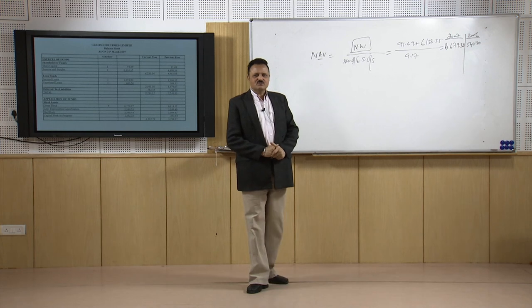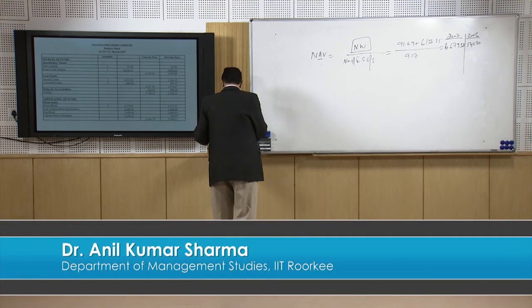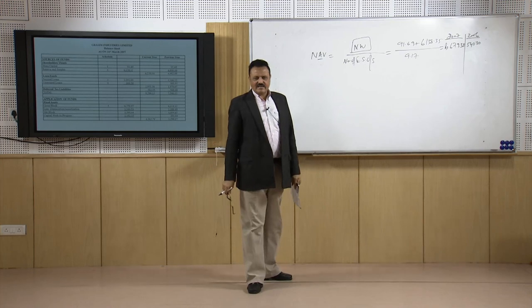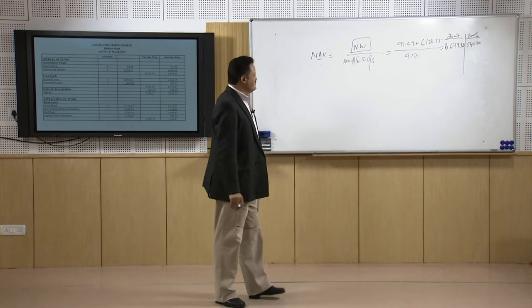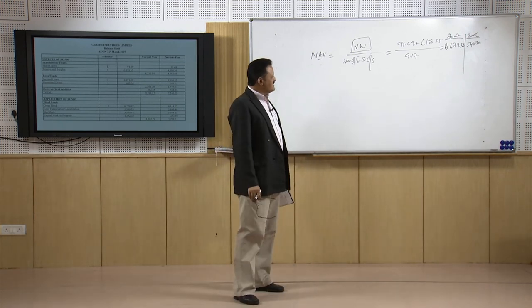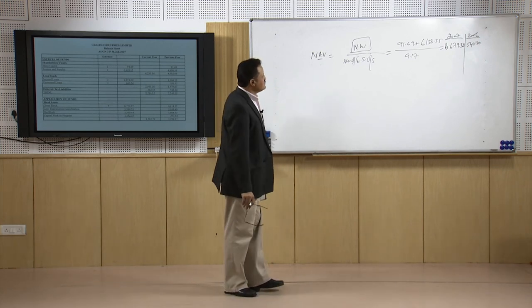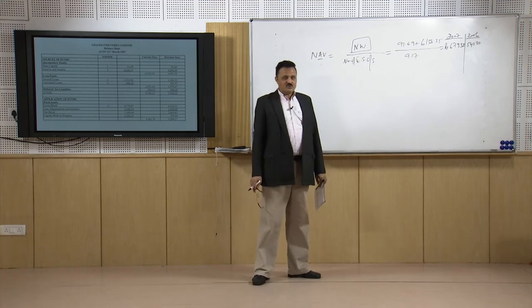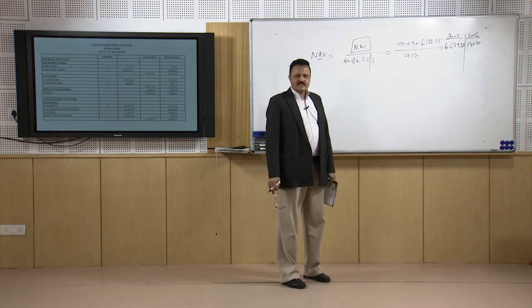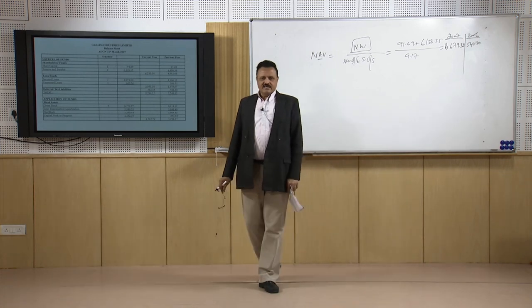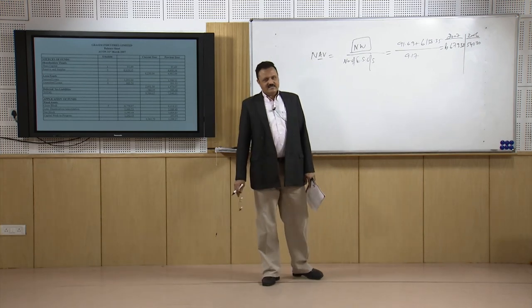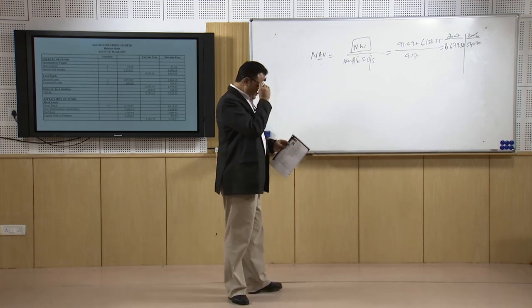Welcome students. We were talking about the solvency ratios and in the process of discussing the solvency ratios, we learned how to calculate the net asset value or the NAV ratio. We found that NAV — net asset value per share — has improved significantly for this company, from 543.3 rupees per share in 2006 to 679.38 rupees per share. This improvement is because of very good improvement in profitability and consequent improvement in reserves and surpluses, while equity capital remains the same.